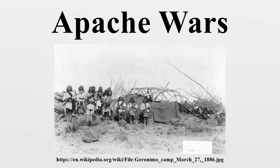The Bascom Affair initiated another 11 years of open warfare between the Apache and U.S. settlers, the U.S. Army, and the Confederate Army. After the American Civil War began in April 1861, Manga's Coloradas and Cochise, his son-in-law, struck an alliance agreeing to drive all Americans and Mexicans out of Apache territory. Their campaigns against the Confederates included the Battles of Chewbac, Cook's Canyon, Florida Mountains, Pinos Altos, and Dragoon Springs.